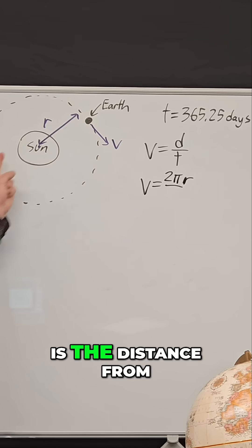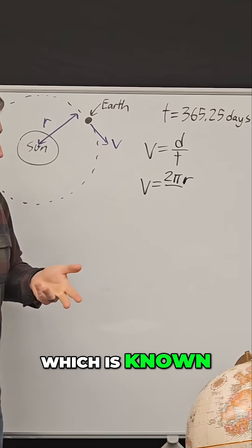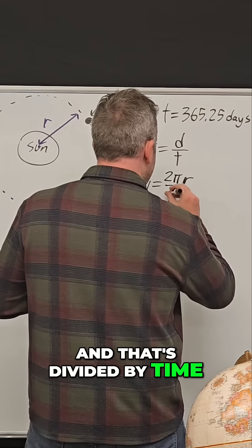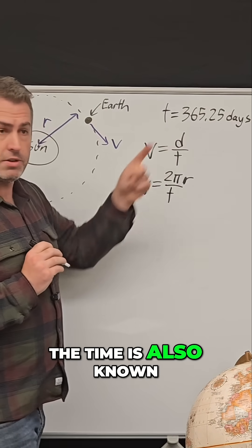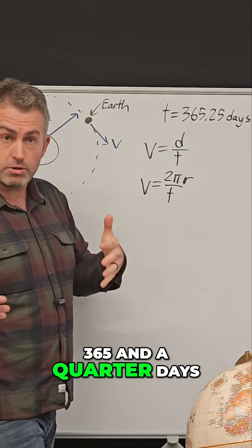And so r, in this case, is the distance from the Earth to the sun, which is known. And that's divided by time. Speed equals distance over time. Well, the time is also known, 365 and a quarter days.